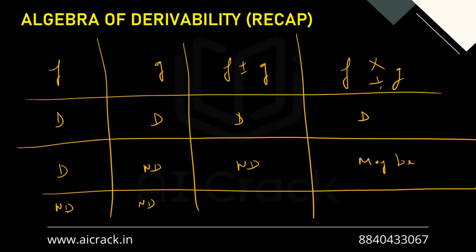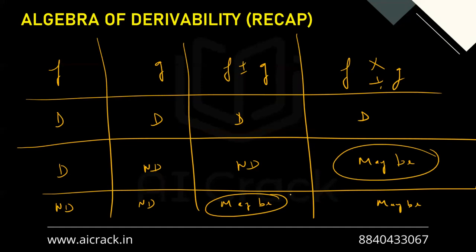In Case 3 — both non-differentiable — then both F ± G and F × G become 'maybe': they could be differentiable or non-differentiable. These three cases are very important to remember.